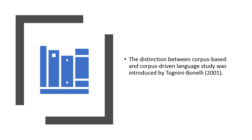However, in the corpus-driven approach, the commitment of the linguist is to the integrity of the data as a whole, and descriptions aim to be comprehensive with respect to corpus evidence. The corpus is therefore seen as more than a repository of examples to back pre-existing theories or a probabilistic extension to an already well-defined system. The theoretical statements are fully consistent with and reflect directly the evidence provided by the corpus. The theory has no independent existence from the evidence, and the general methodological path is: observation leads to hypothesis, which leads to generalization, and then leads to unification in theoretical statement.